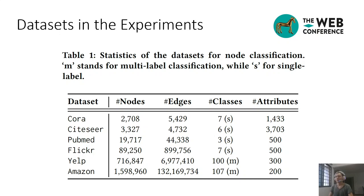For node classification, we use the standard benchmark datasets, Cora, Citeseer, Pubmed, Flickr, Yelp, and Amazon for evaluation. The first three are citation networks, where each node is a document and each edge is a citation link.